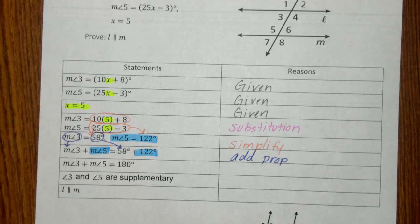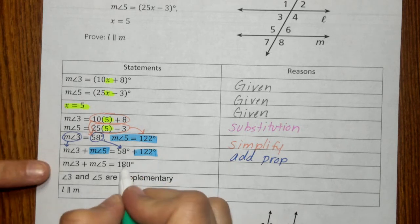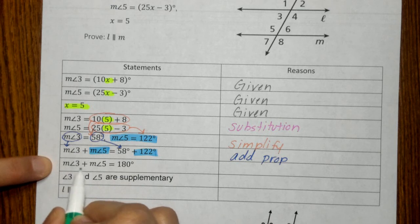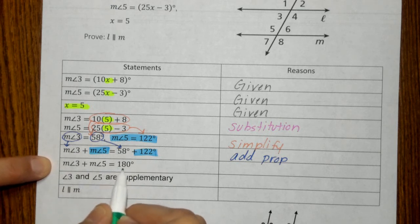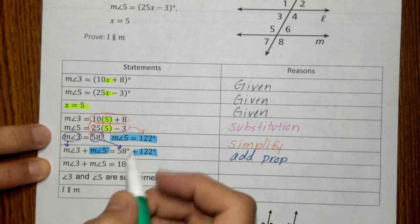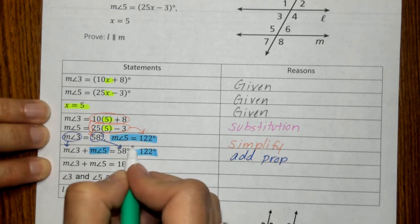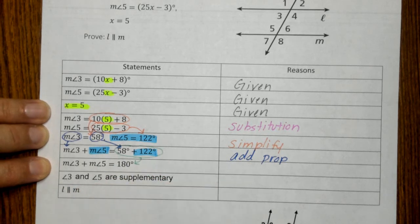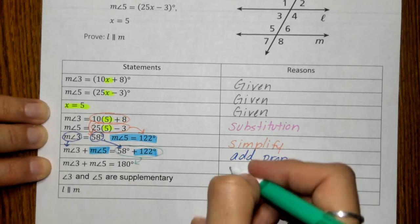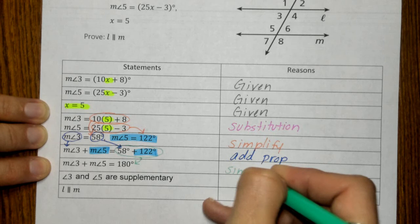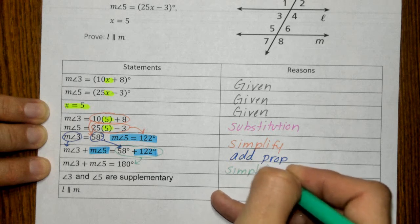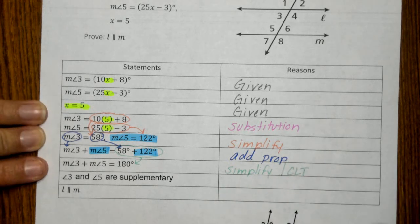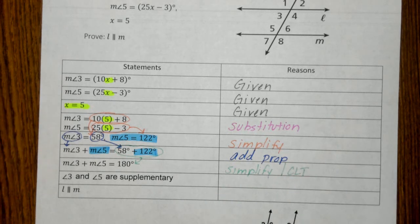Next, we still have the measurement of angle three plus the measurement of angle five, but now it equals 180 degrees. All we did was combine these like terms to get 180. So this is your simplify — and actually, we did combine like terms on that one.